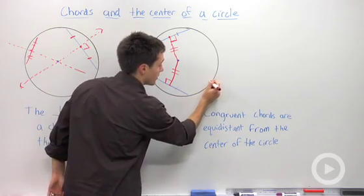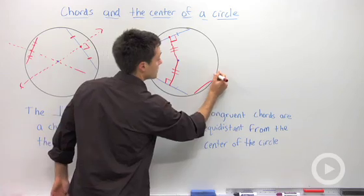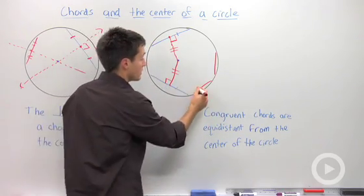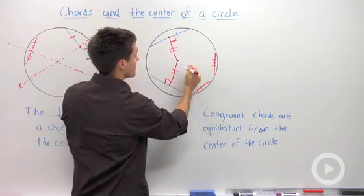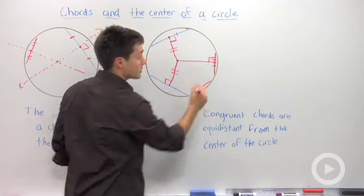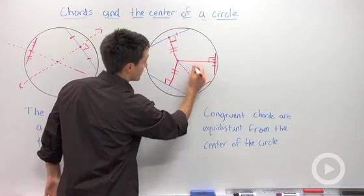So if I were to draw in two other chords, and if I told you that these chords are congruent, then their distance from the center of that circle measured along a perpendicular will be congruent.